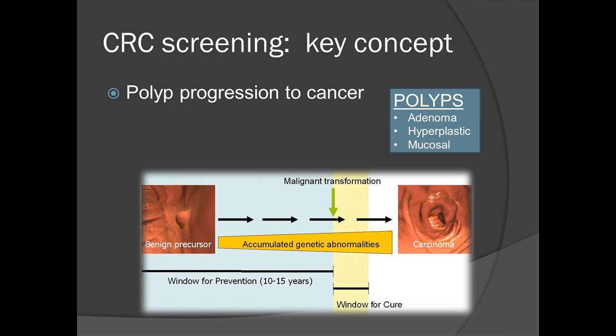If you think about screening for other cancers such as breast cancer, prostate cancer, or lung cancer, when we screen for those cancers, we're screening for an early cancer. Colorectal cancer is the perfect cancer for screening because we screen for early cancer but also have the opportunity to screen before it turns into cancer. If we can remove this benign lesion, we can prevent the person from ever having cancer. That's why screening is so important and so effective for colorectal cancer.